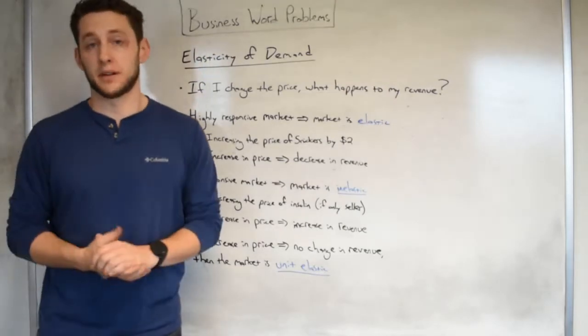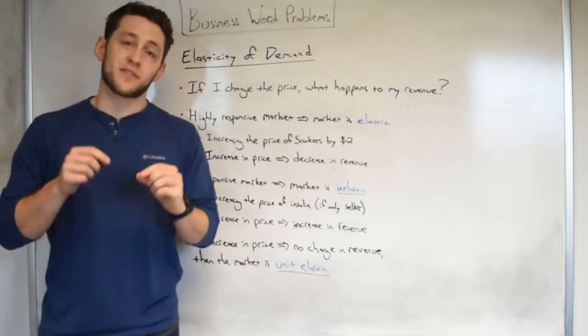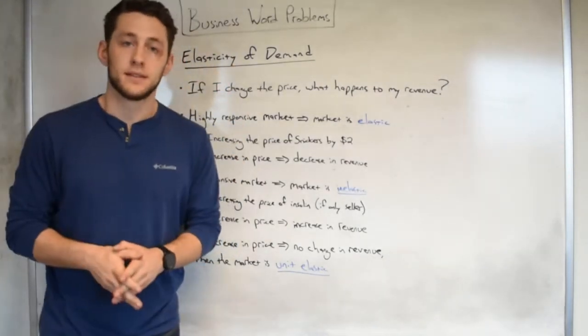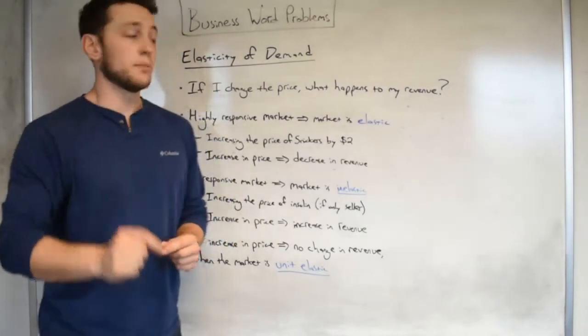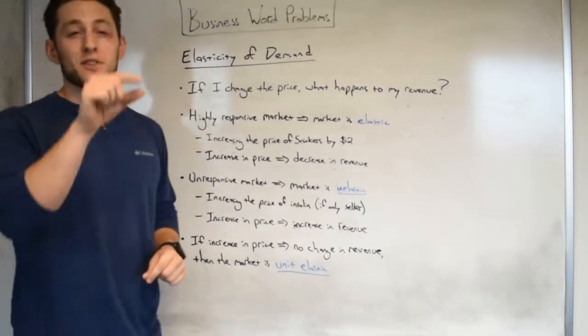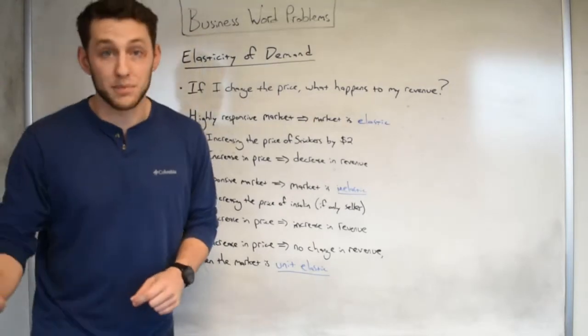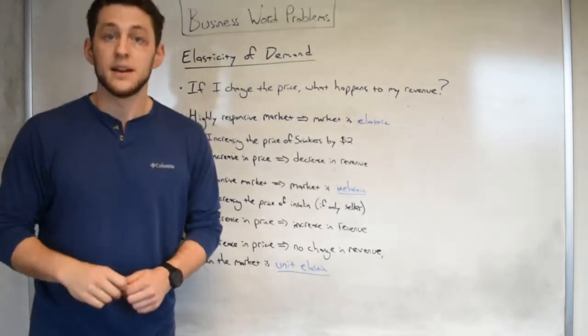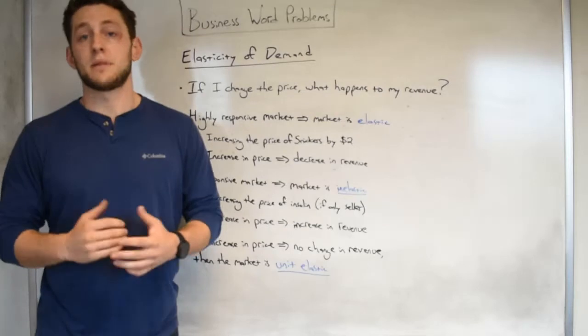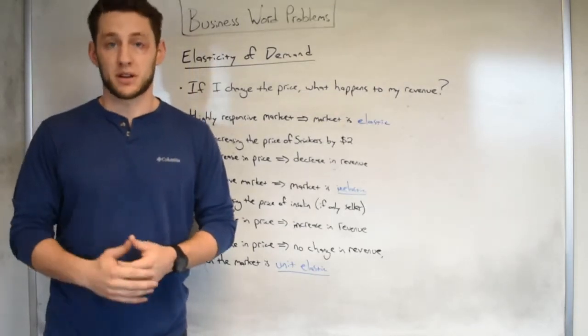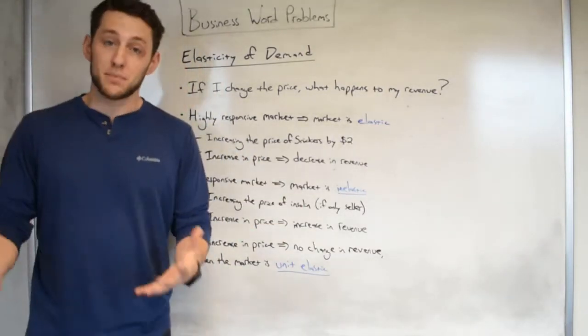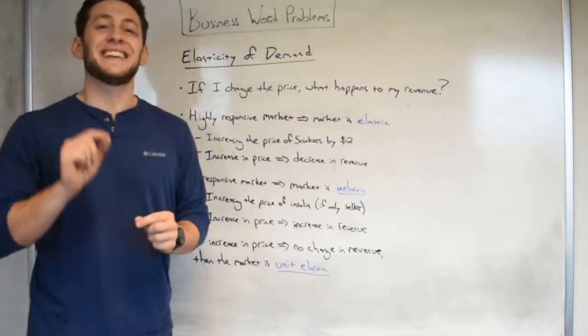Now we go into a little bit about the market. One way to measure the responsiveness of consumers to a change in the price of the product is actually by the elasticity of demand. Now for some terminology, we will call a market elastic if we have a highly responsive market. What that means is if you increase your price by a little bit, revenue will go down because consumers will stop buying your product. Think about it this way: if I increase the price of a Snickers by $2, there are a lot of other perfectly good chocolate bars that people are going to go for. That is a highly responsive market.